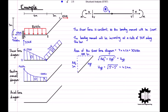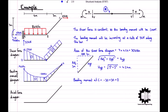As the bending moment at point B is equal to negative 30 kilonewton meters, the bending moment at point C is equal to negative 30 plus 30, which equals zero. The bending moment increases linearly from point B to point C at a constant rate of 7 kilonewtons, giving us the final bending moment diagram.